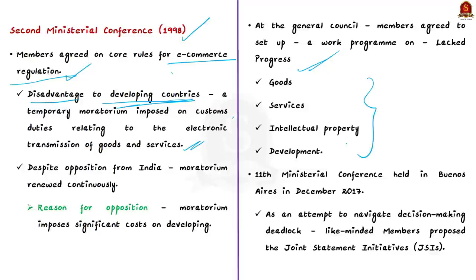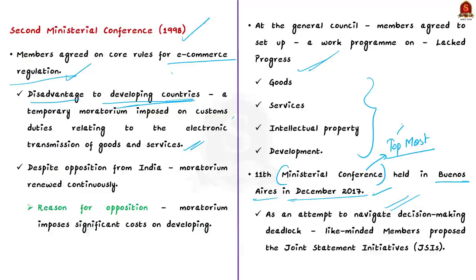To navigate the decision-making deadlock, like-minded members proposed an innovative approach known as the Joint Statement Initiative during the 11th Ministerial Conference held in Buenos Aires in 2017. The Ministerial Conference is the topmost decision-making body of the WTO; it meets every two years, brings together all members, and can take decisions on all matters under any multilateral trade agreement. WTO follows the practice of decision-making by consensus through ministerial conferences.